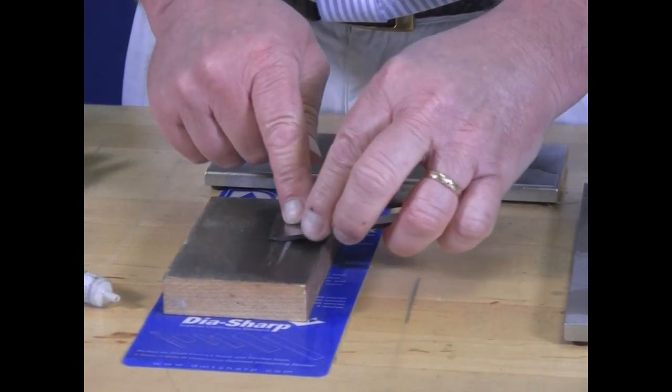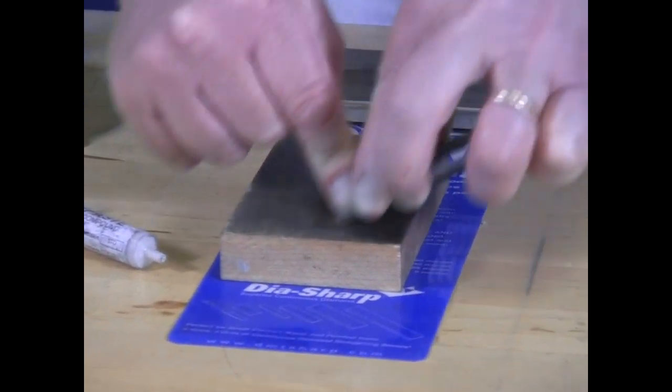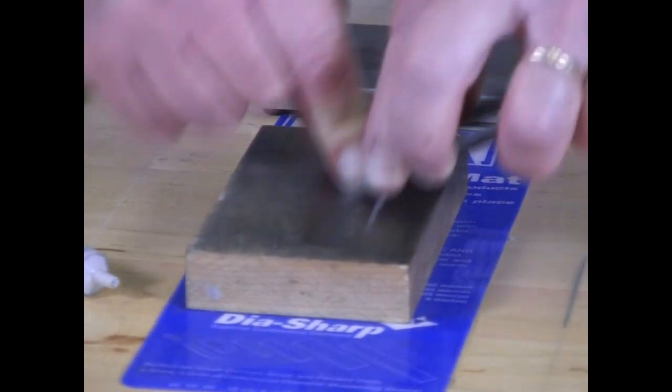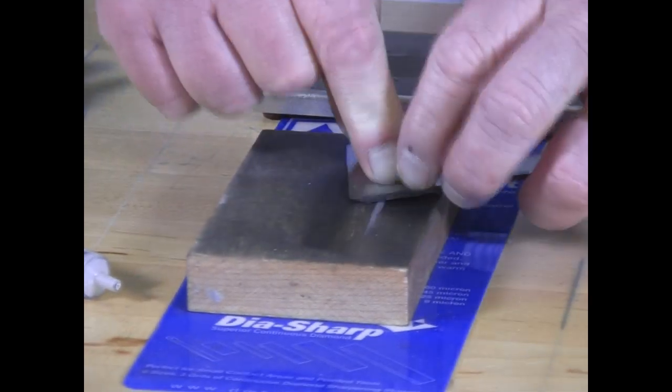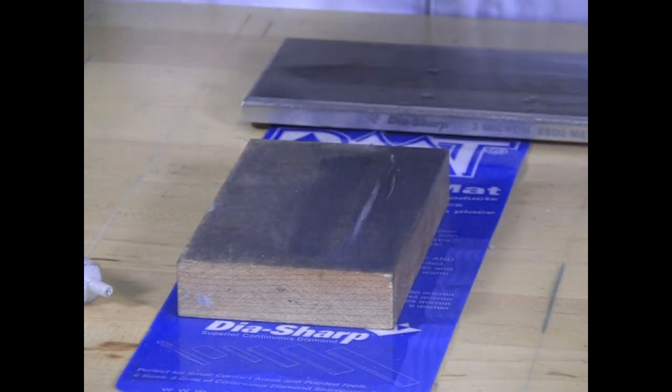Now the 1 micron paste. And you can obviously see how quickly it is to move from the coarse diamond stone to the 1 micron paste.